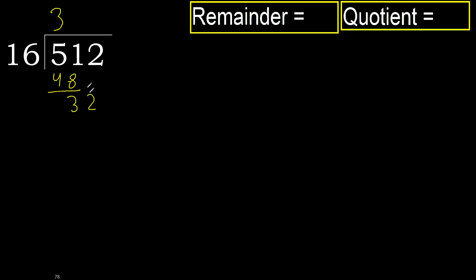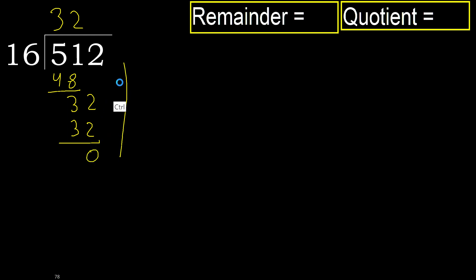32. 16 multiplied by 2 is 32. 32 is not greater. Subtract. There is no next number, therefore finish.